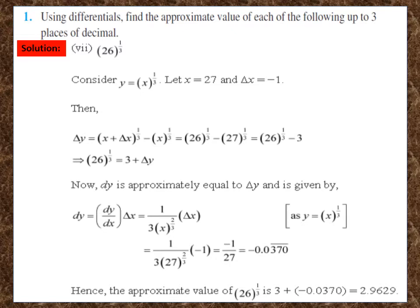Delta y is approximately equal to dy, and dy = (dy/dx) × delta x. We have y = x^(1/3), so dy/dx = (1/3)x^(−2/3). With x = 27 and delta x = −1, putting these values we get dy = −1/(3×27^(2/3)) = −1/(3×9) = −0.037. Since (26)^(1/3) = 3 + delta y, we get 3 + (−0.037) = 2.963.